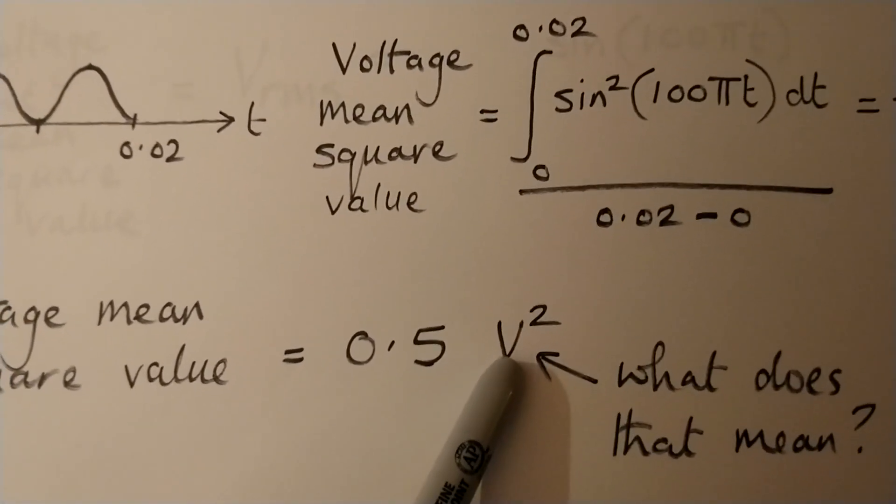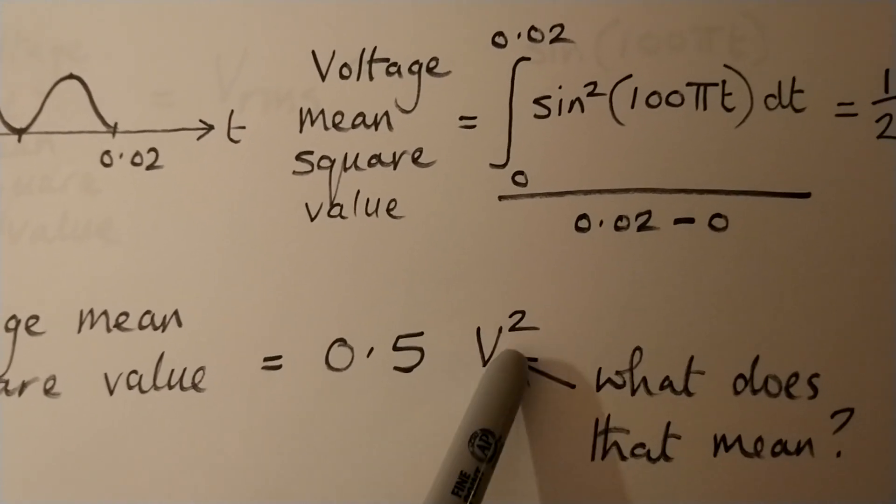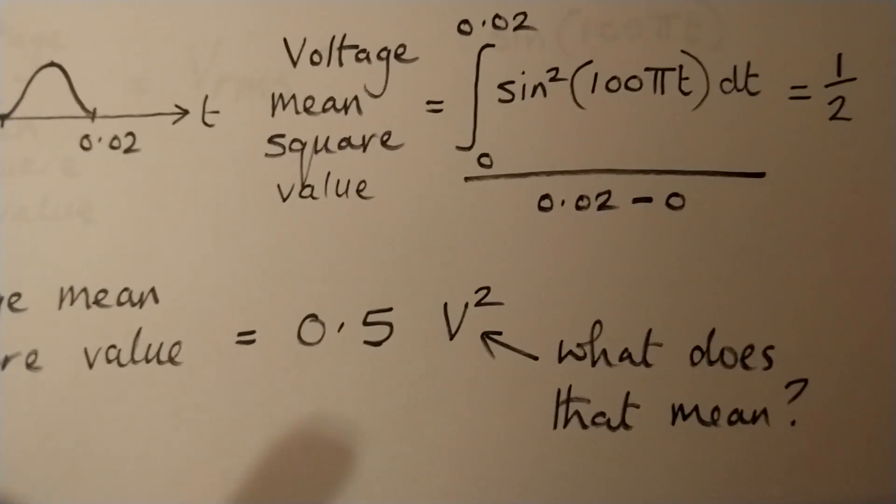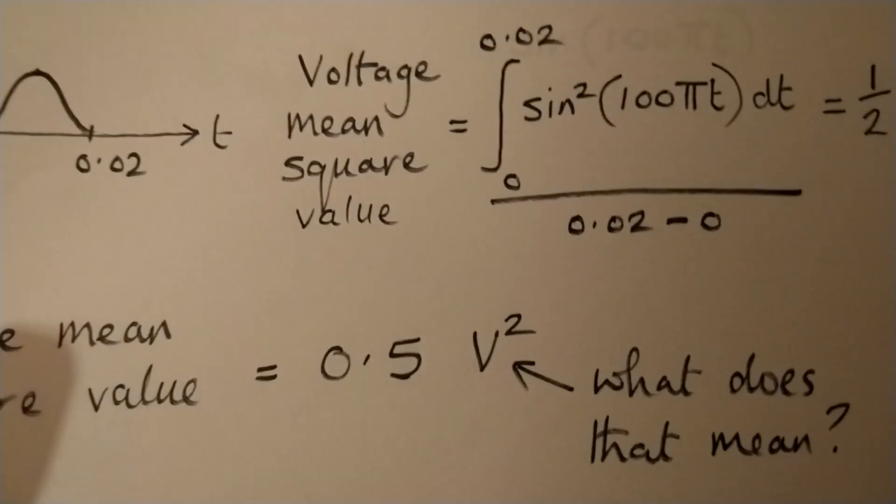But the unit, because we squared everything, is actually volts squared. What does that mean? It doesn't really mean anything in particular. So we have to account for that in some way.